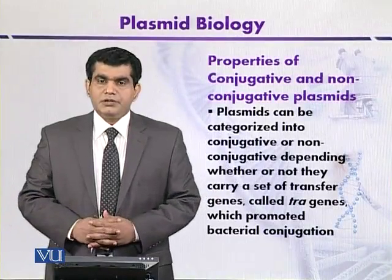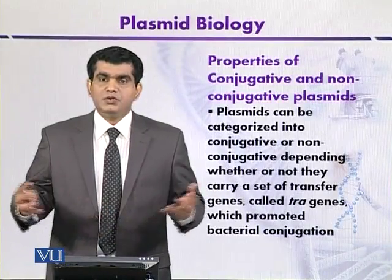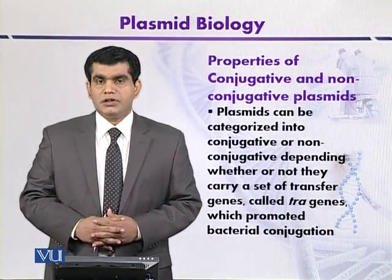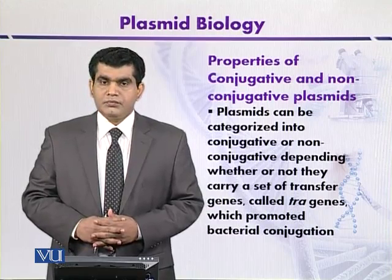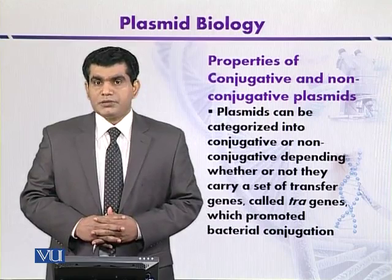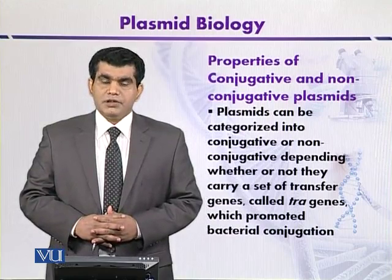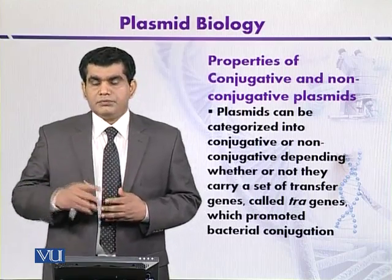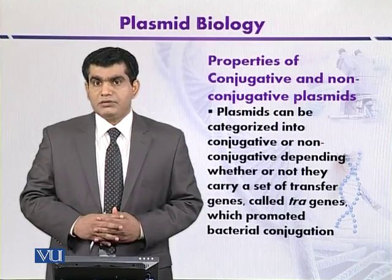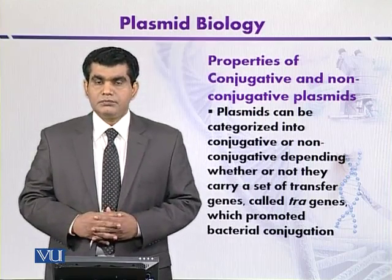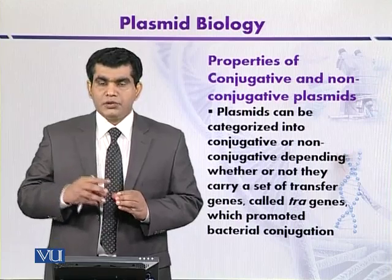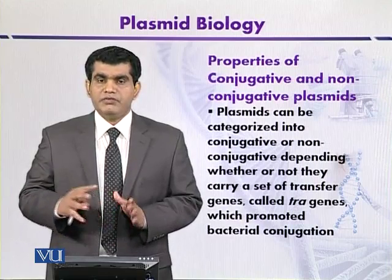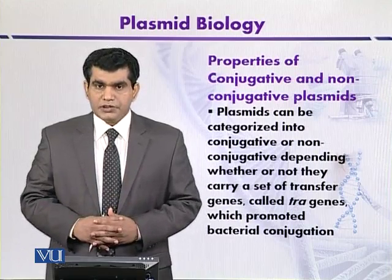Plasmids can be classified into two major categories: conjugative or non-conjugative plasmids. Conjugative plasmids are those that can be transferred from one bacterium to another by a process called conjugation, where plasmid DNA is transferred from a donor to a recipient. Hopefully you are well familiar with this process of conjugation.